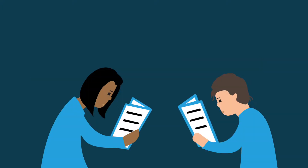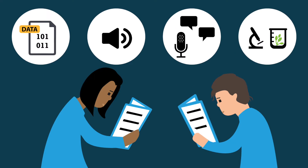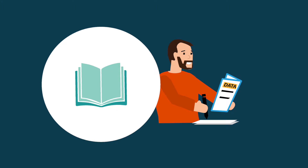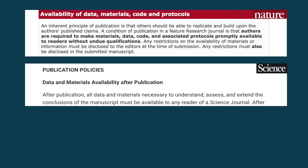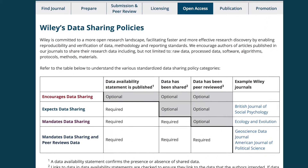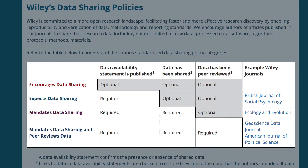An increasing number of scientific publishers require that research data underlying publications should be made available for all readers. Some publishers only require access to data for the reviewers. Journals like Nature, Science and PLOS require access to data for readers as a condition for publication. The publisher Wiley encourages authors to share their research data, but each of Wiley's journals has its own individual data policy. The requirements are often stated in the instructions for authors or in the journal's guidelines for research integrity.